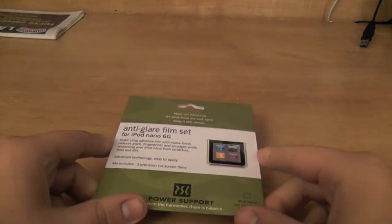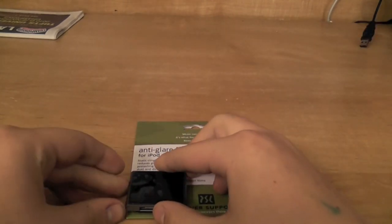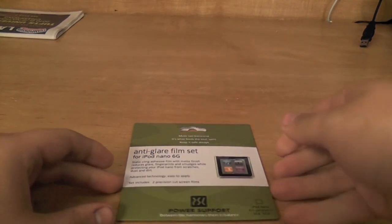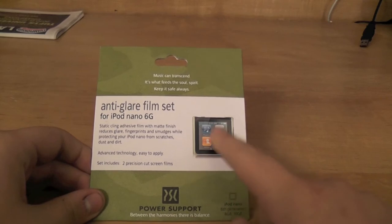So with that being said, I'll just talk about the box quickly. Here's the box and here's the 6th generation iPod Nano. You can kind of see how big it is and the box itself contains just the two anti-glare film sets.